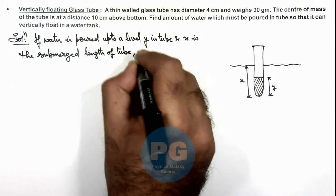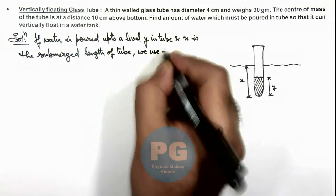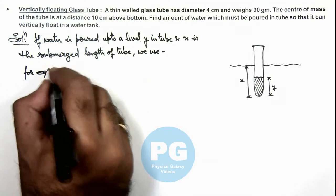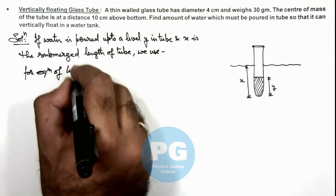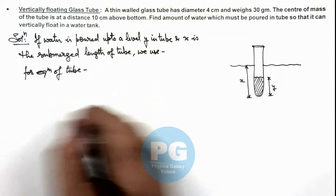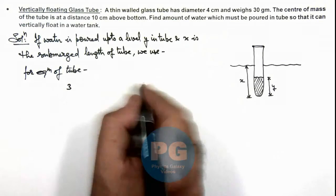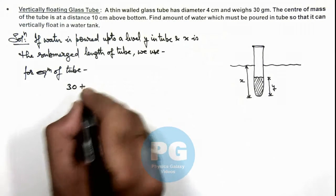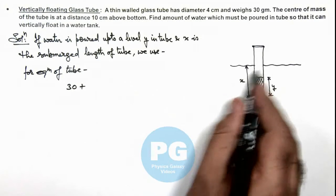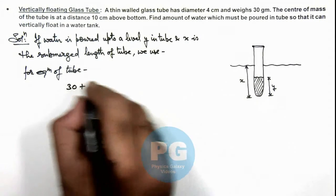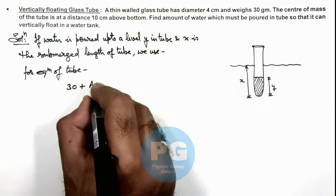Here, we can use for equilibrium of tube. Here we can write the weight of tube is 30 grams so we can solve it in CGS units also. This will be 30 plus if A_y is the cross sectional area of the tube, the mass of water in it will be A_y times y times rho.